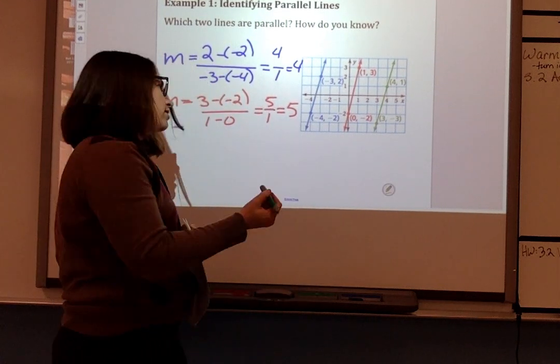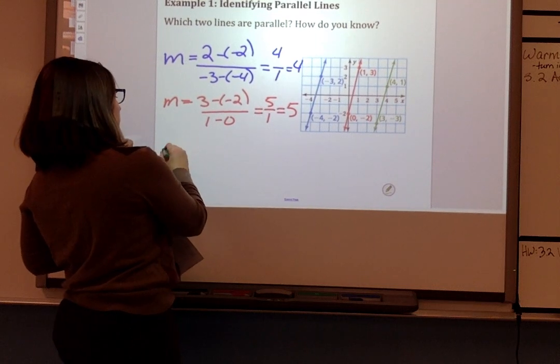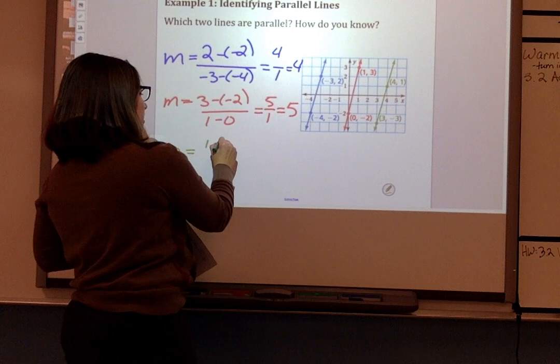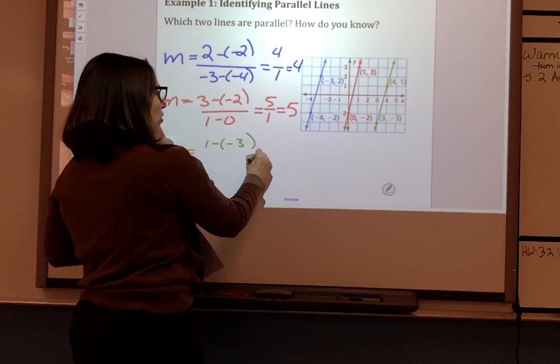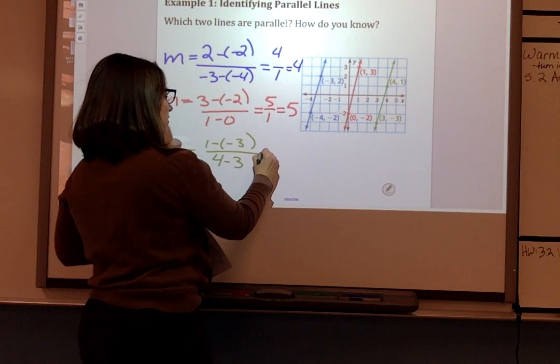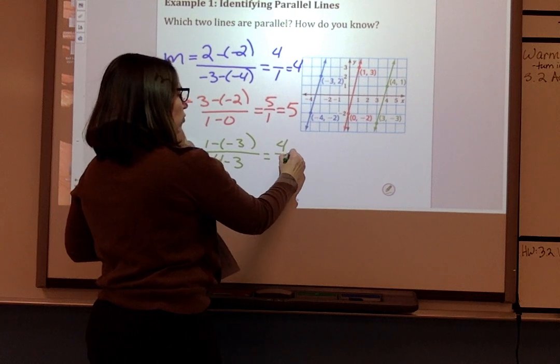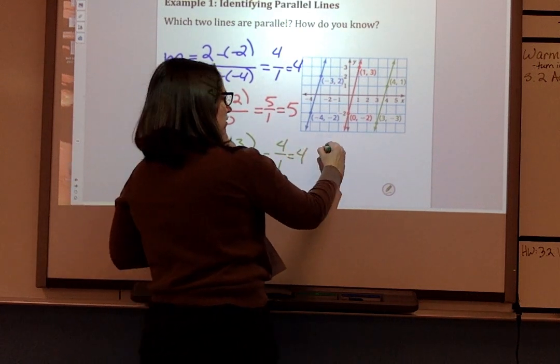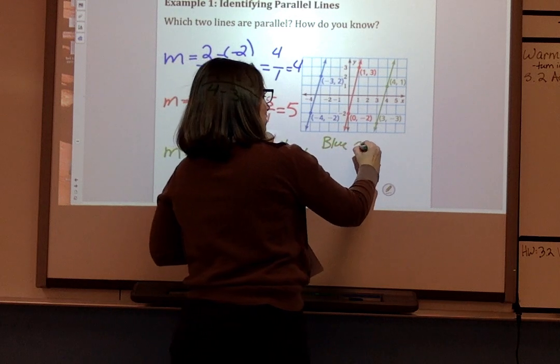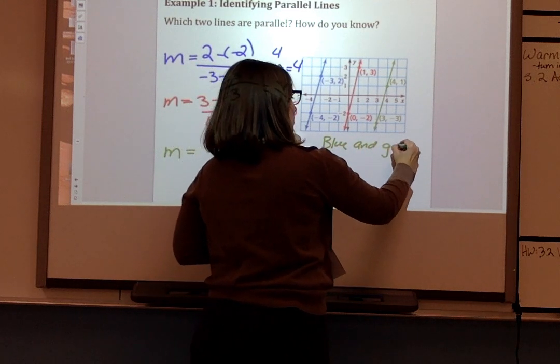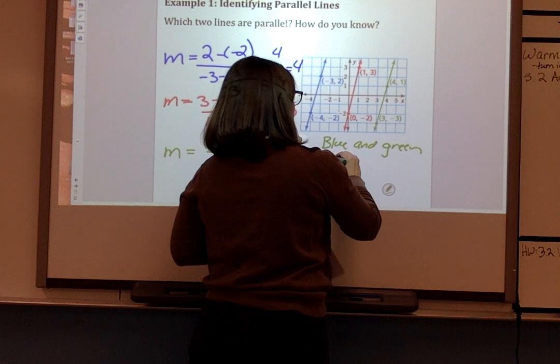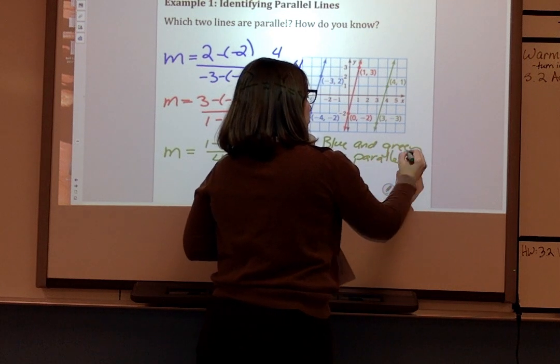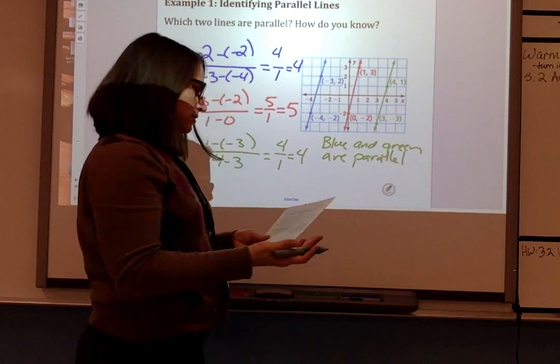So the green one hopefully is similar. It's parallel to one of the two other lines. So we'll do 1 minus negative 3 all over 4 minus 3. That's 4 over 1 or 4. So the blue and the green are parallel, and we know that because they have the same slope.